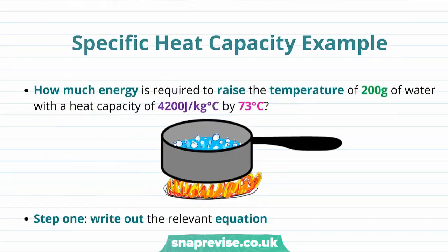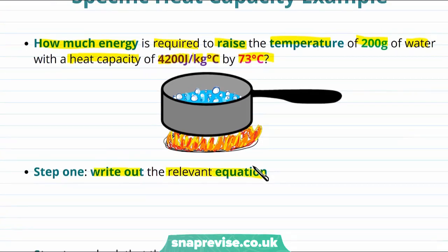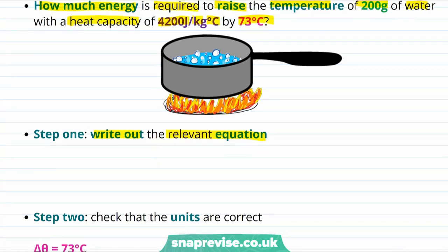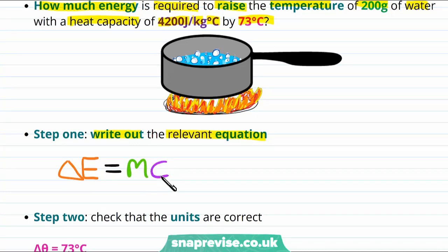Now let's look at an example using specific heat capacity. How much energy is required to raise the temperature of 200 grams of water with a specific heat capacity of 4200 joules per kilogram per degree centigrade by 73 degrees centigrade? The first step is to write out the relevant equation: delta E equals mass multiplied by specific heat capacity multiplied by the temperature change.